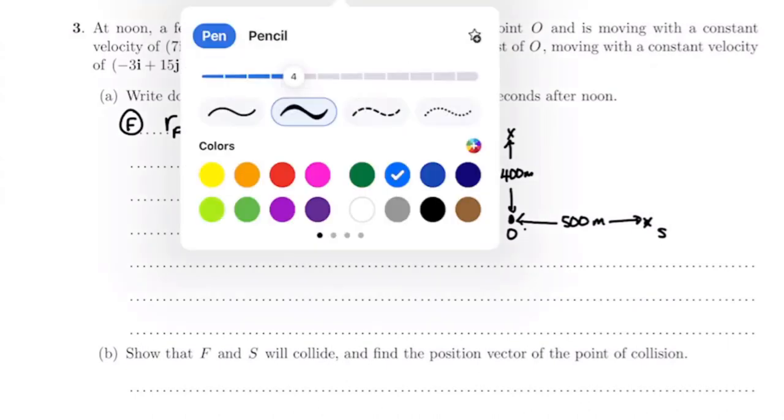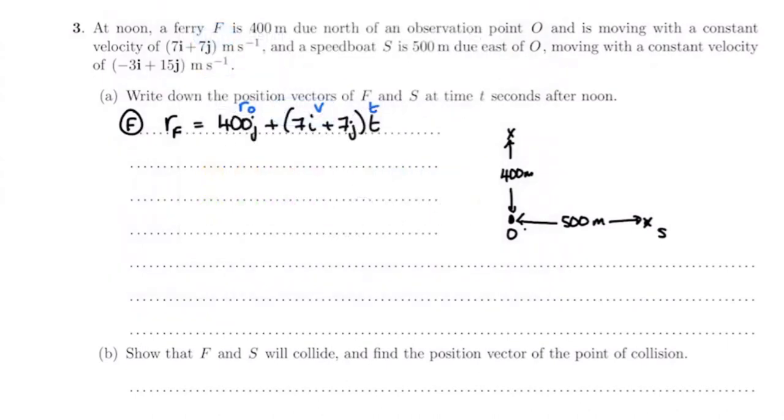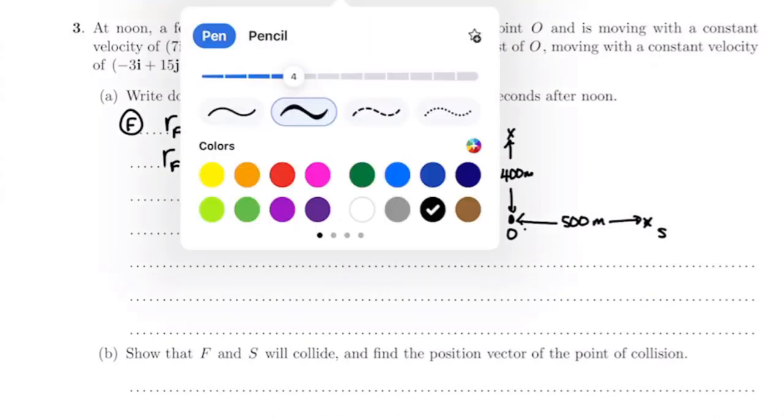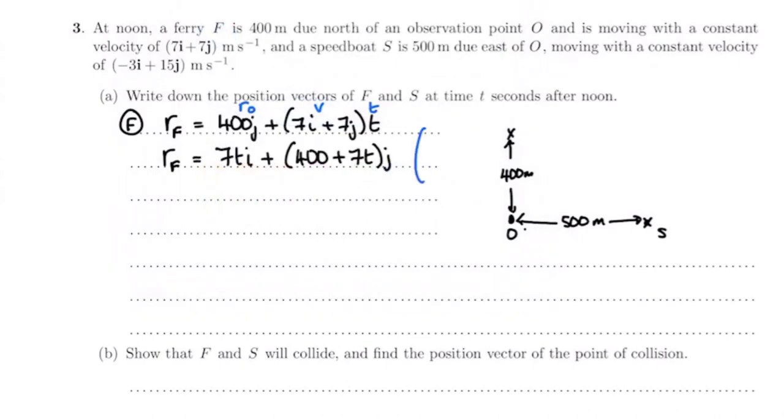I'll just highlight it: this is r₀ and then it's vt. Now you can write that a bit simpler if you want to. Usually what we do is we put the i's first, so rF is 7ti plus 400 plus 7t times j. Now you could also if you wanted write that as a column vector: (7t, 400 + 7t). Notice if you've got your column vectors you don't have your i's and j's. We're going to do the same for the speedboat.